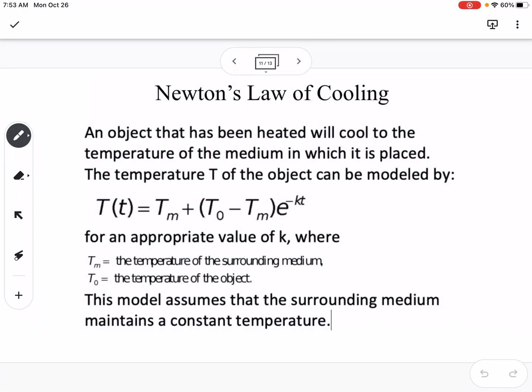Newton's law of cooling. An object that has been heated will cool to the temperature of the medium in which it is placed. The temperature T of the object can be modeled by this equation for an appropriate value of K, where T_m is the temperature of the surrounding medium and T_0 is the temperature of the object. This model assumes that the surrounding medium maintains a constant temperature.